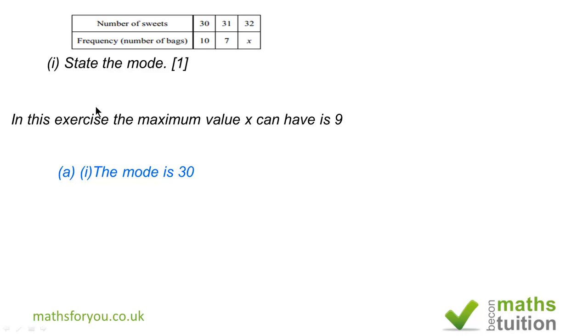Part A sub 1 just says state the mode, so there is no calculation involved but there is some reasoning. Because x is an inequality between 0 and 10 but less than 10, the maximum x can be is 9. So even if x is 9, we still have 30 as the modal value.